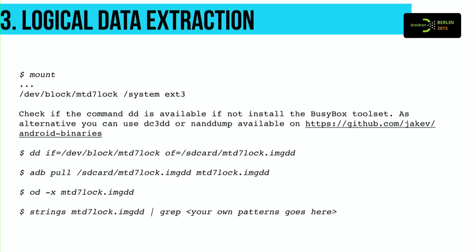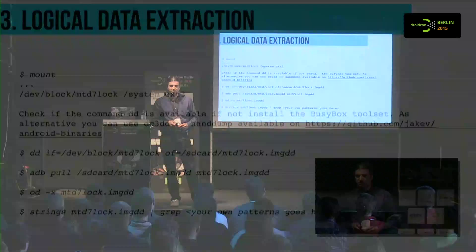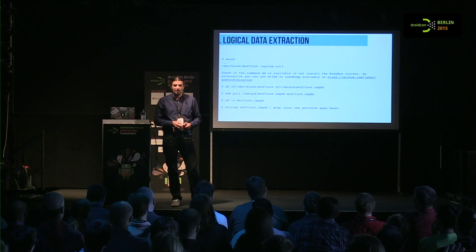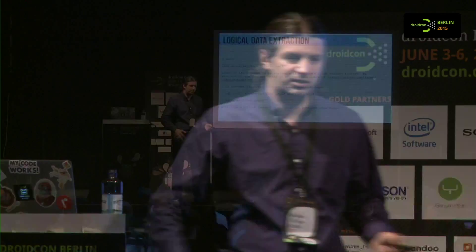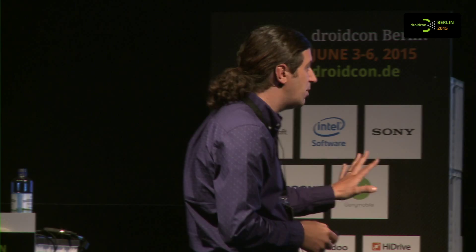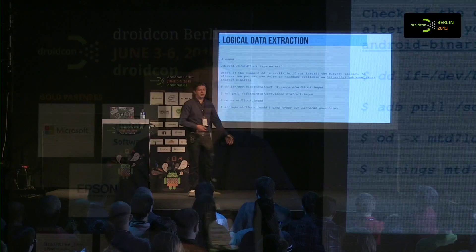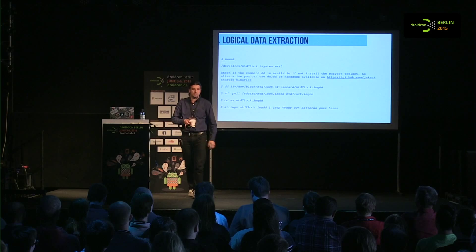Physical data extraction means you take the phone, remove all the storage, and get information from there, then use desktop tools. But let's focus on logical data extraction: ADB, SQLite, content providers, and backup. One of your best friends is the DD command, where you can do a complete copy of a partition. In a normal Android phone we have about six partitions — in Samsung phones there are 19. You can do a one-to-one copy, get it locally, and work on it. If DD is not available, install BusyBox. You can also DD the partition, get it out, and search for text inside the partition.